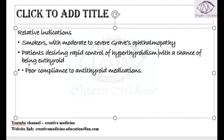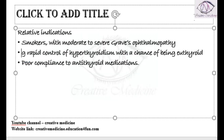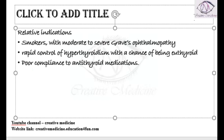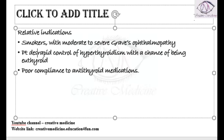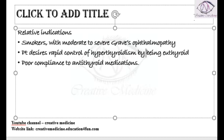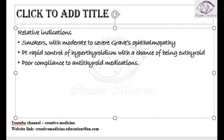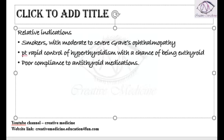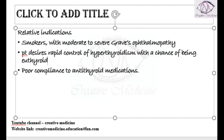Surgery is also relatively indicated when the patient desires rapid control of hyperthyroidism along with a chance of becoming euthyroid. If the patient wants rapid control and wishes to become euthyroid, surgery is the better option. Additionally, if there is poor compliance to antithyroid medications, surgery is indicated.